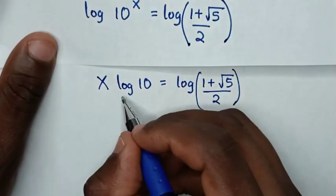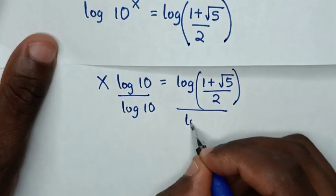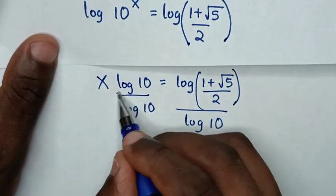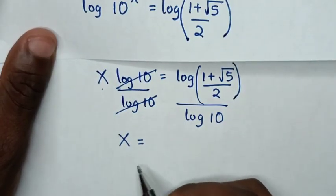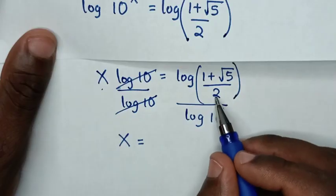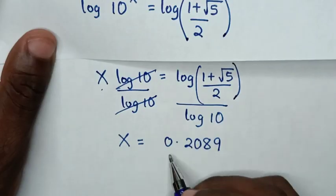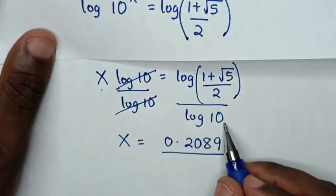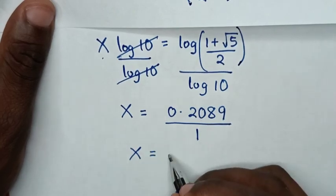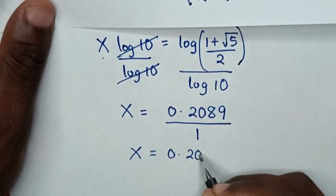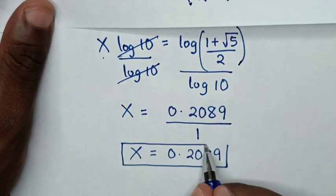To find the value of x, we divide both sides by log(10). This log(10) cancels, so x = log((1 + √5) / 2) = log(1.2089) / log(10). Since log base 10 of 10 is 1, x = 0.2089. This is the value of x from the first solution.